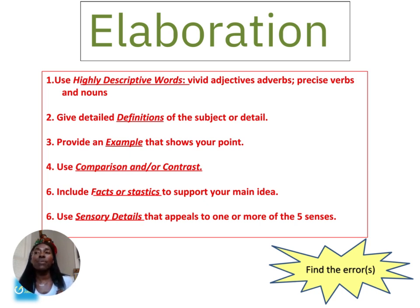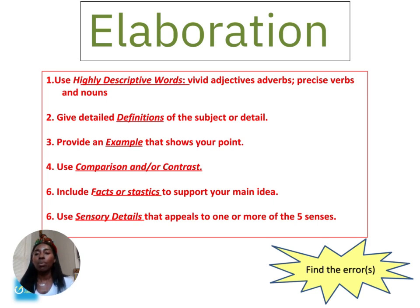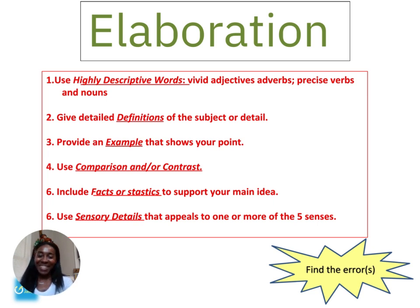Number one: use highly descriptive words — vivid adjectives and adverbs, precise verbs and nouns. Here's a real-life example: if someone asks how you're doing and you say 'I'm good' or 'I'm fine,' that's not very descriptive. People don't really know how you feel. They can tell by your tone of voice, but when you're writing, the reader can't hear your voice.